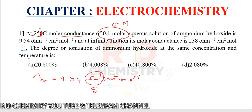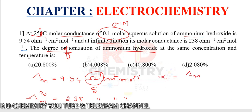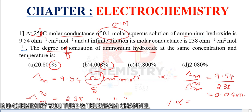At infinite dilution, molar conductance lambda M infinity is equal to 238 with the same units. We have to calculate degree of ionization: alpha equals lambda M divided by lambda M infinity, which is 9.54 divided by 238, giving 0.04. As a percentage, 0.04 into 100 equals 4%. The answer is option B.